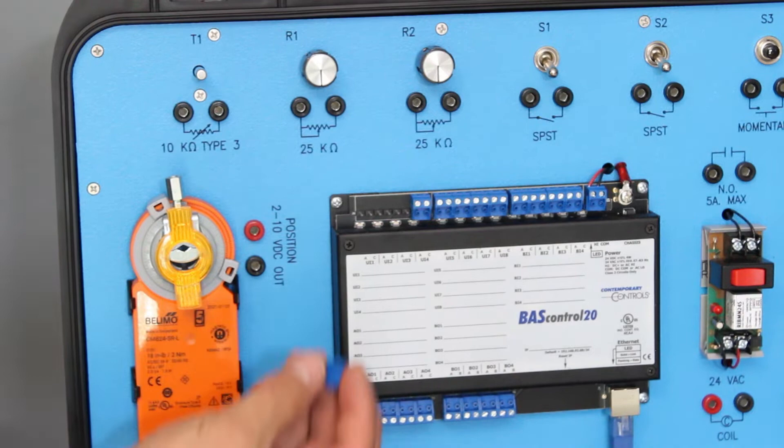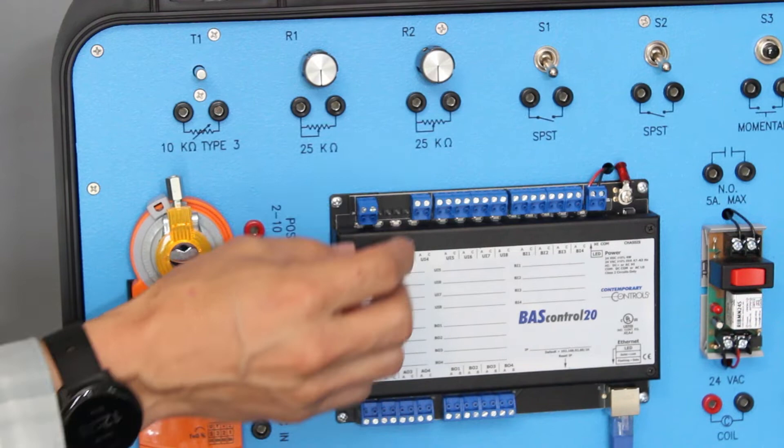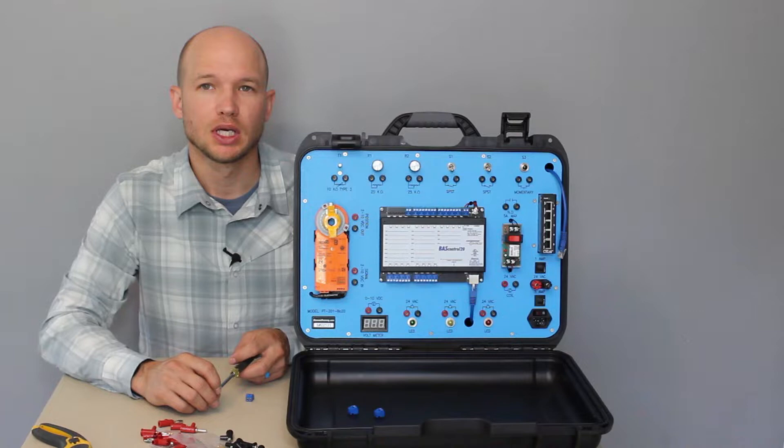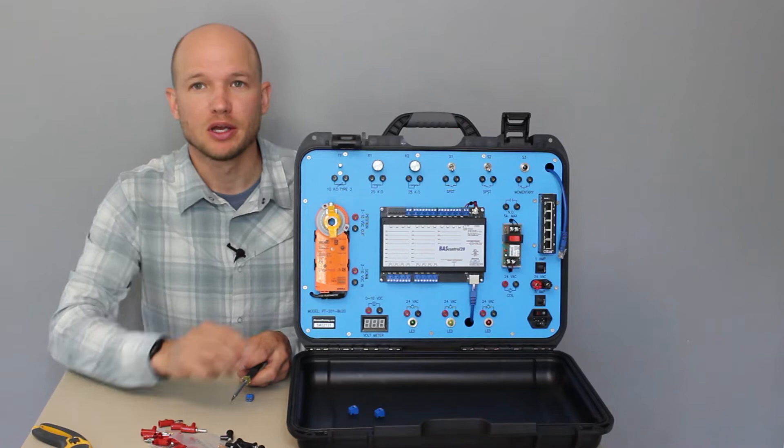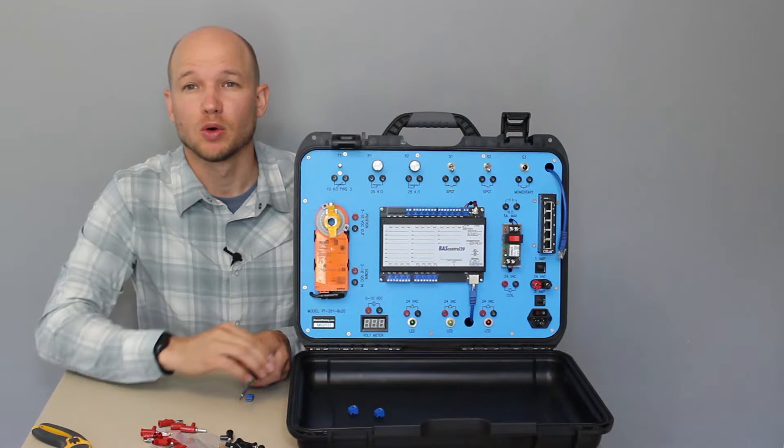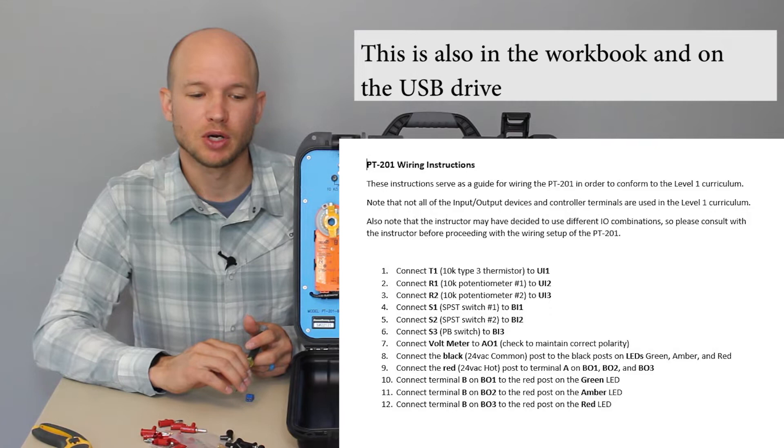Each input and output is going to be two prongs, right? A common and a hot. And they just push on and pull off. In the level one curriculum, we're not using every input and output on the controller. So you don't necessarily have to pull off every connector off the controller. We're just going to be pulling off the ones that we need.